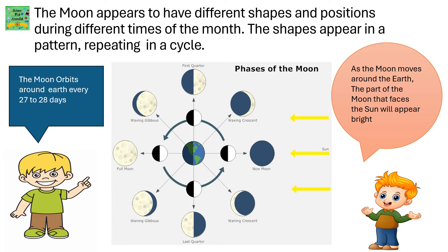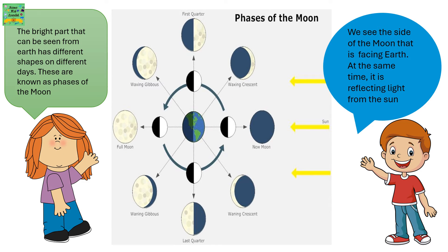The shapes appear in a pattern repeating in a cycle. The moon orbits around the earth every 27-28 days. As the moon moves around the earth, the part of the moon that faces the sun will appear bright. The bright part that can be seen from earth has different shapes on different days. These are known as phases of the moon.